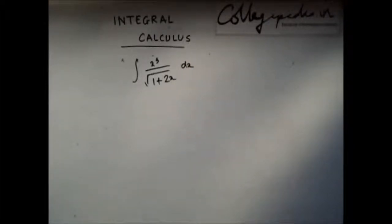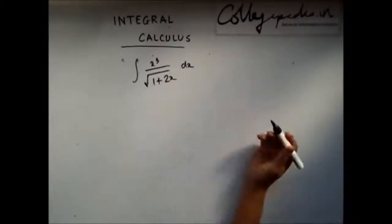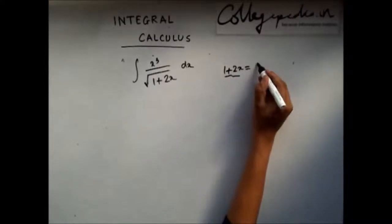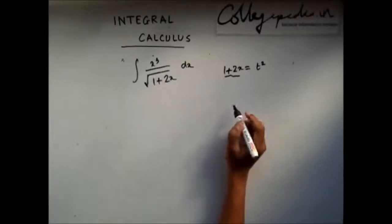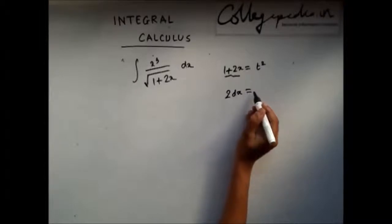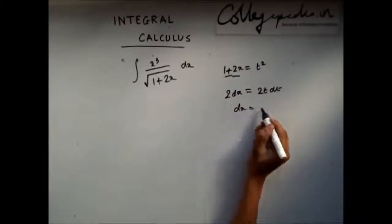Again in this question you should try to get rid of this root sign. To get rid of this root sign, the first obvious thing you should do is replace 1 plus 2x with t square, so that if you put t square you will get rid of this root sign. My 2 dx will be equivalent to 2t dt, or dx is t dt.